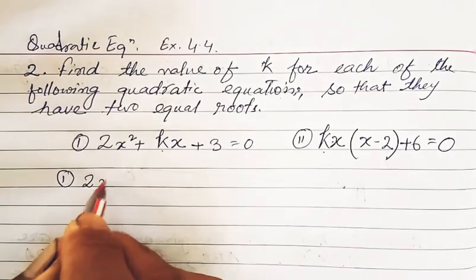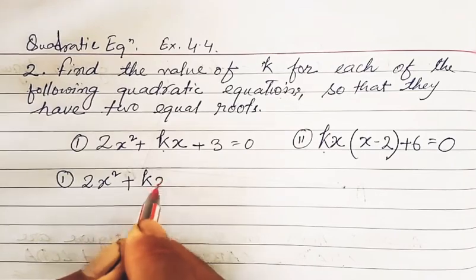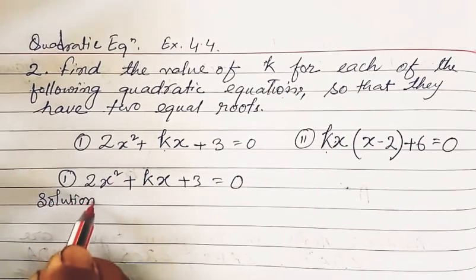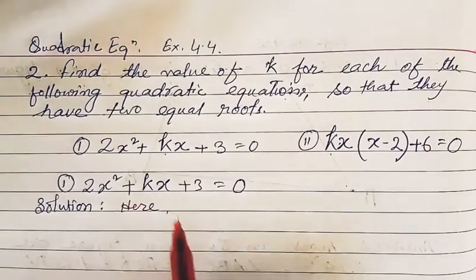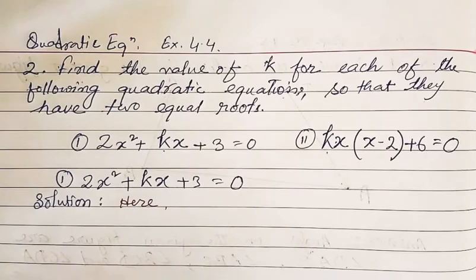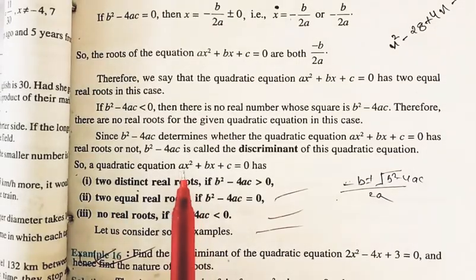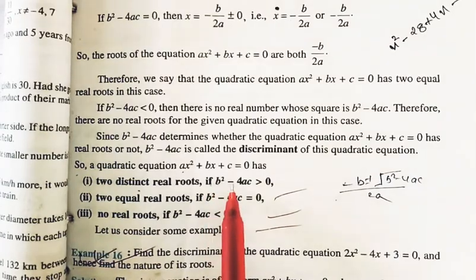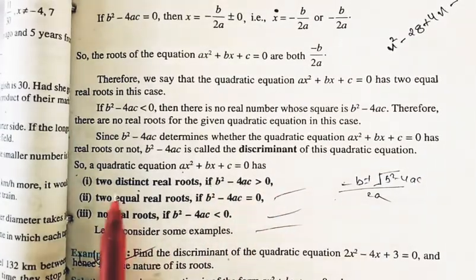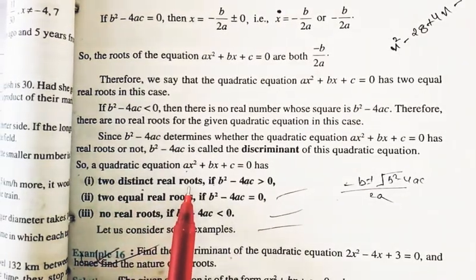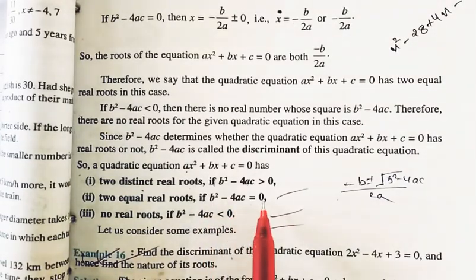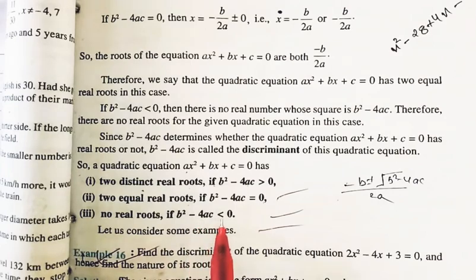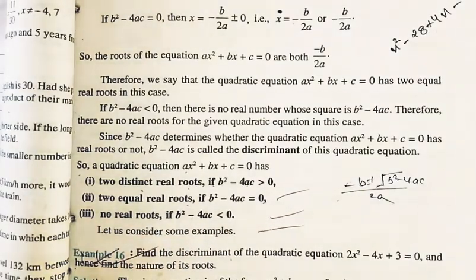Let us take the solution of equation one. The equation is: 2x² + Kx + 3 = 0. Before solving this equation, you have to know that in a quadratic equation ax² + bx + c = 0, if b² - 4ac is greater than zero, then you will have two distinct real roots — two different roots.